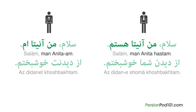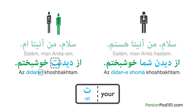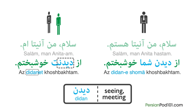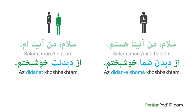Hastam is the to-be verb conjugated for the first person. Pay attention to how 'nice to meet you' changes. We went from 'az didanet khushbaktam' to 'az didaneh shoma khushbaktam.' 'Didanet' is used when speaking informally to only one person. It is formed by adding 'et,' meaning your, to the end of 'didan,' meaning seeing or meeting. In the formal version, instead of 'et,' we add 'e-shomah.'